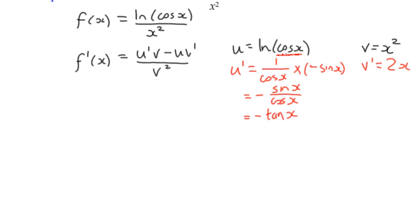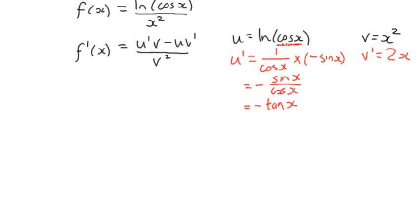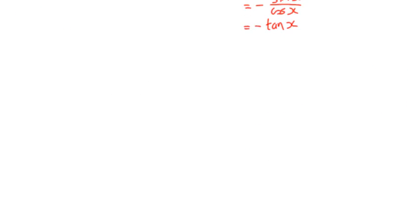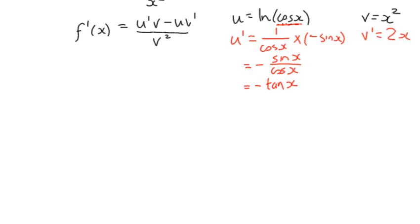We can apply all that to our product, or sorry our quotient rule. So u' v, negative tan(x) multiplied by x squared.